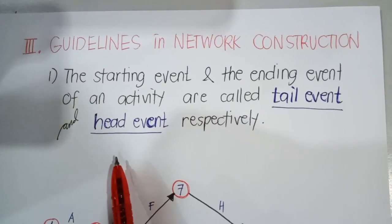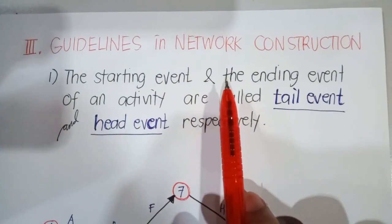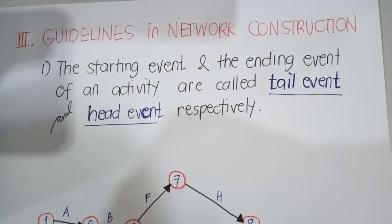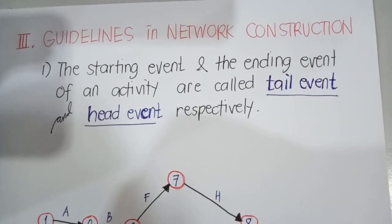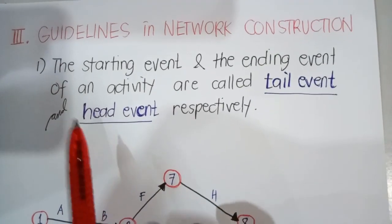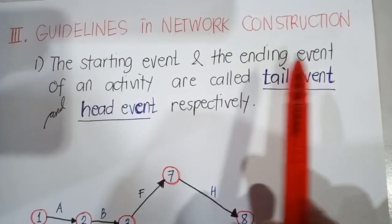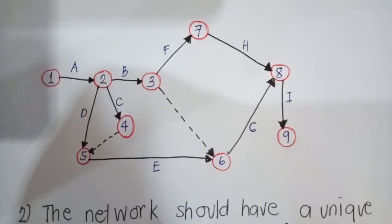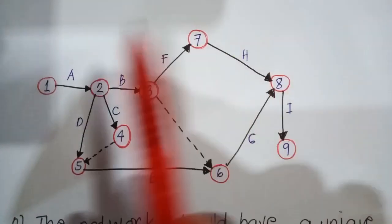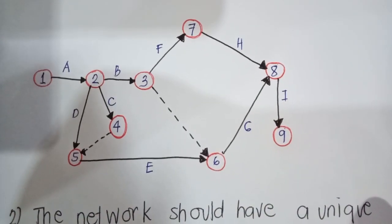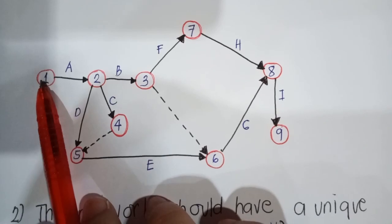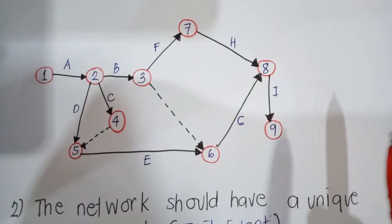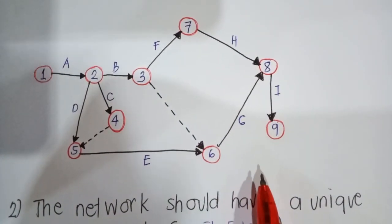The next basic concept is the guidelines in network construction. There are six guidelines. Guideline number one states that the starting event and the ending event of an activity are called the tail event and head event, respectively. In a network diagram, the numbered circles are called nodes — we have nodes 1 through 9 and activities A through I. Node 1 is our starting event and is called the tail event, while node 2 is our ending event and is called the head event.